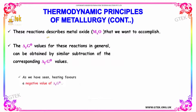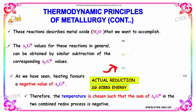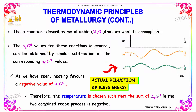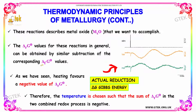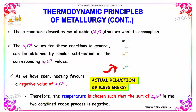This reaction describes the metal oxide reduction we want to accomplish. The delta_r G° values for this reaction can be obtained by subtraction of the corresponding delta_f G° values. As we have seen, heating favors a negative value of delta_r G°. Therefore, the temperature is chosen such that the sum of delta_r G° in the two combined redox processes is negative.